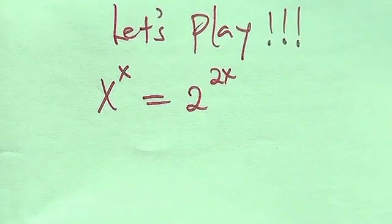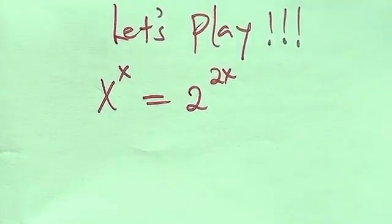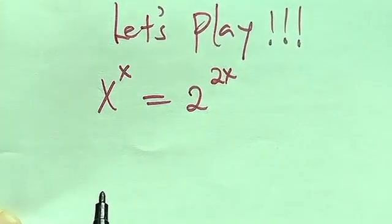We have x to power x equals 2 to power 2x. So therefore I would like to be correcting some mistakes here and try to explain the detail. So now we have this question. It's very simple.